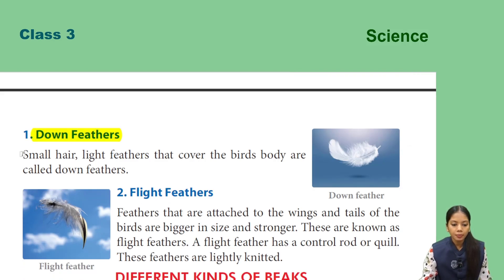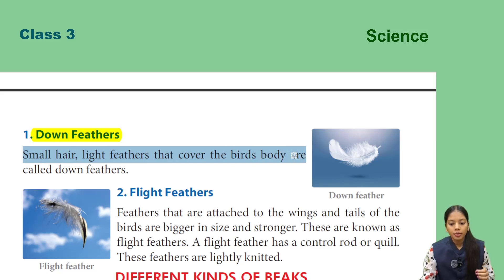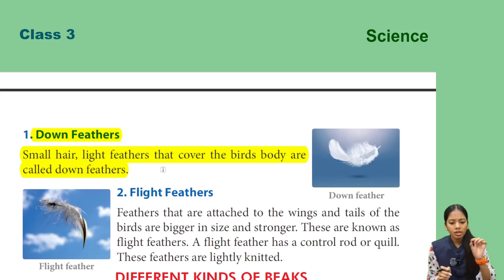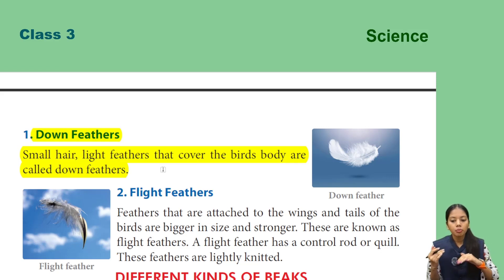Small, hair-like, light feathers that cover the bird's body are called down feathers. So small and light feathers covering the bird's body are called down feathers.